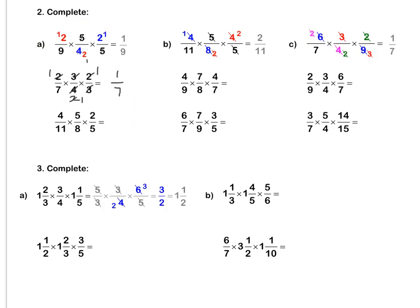Question B: we divide our 5s and our 5s. Then our 4 and our 8, we divide by 4 to get 1 and 2. Then we can simplify the 2 and the 4 by dividing by 2, giving 1 and 2. We multiply out to get 2 over 11. Press pause to complete question B.